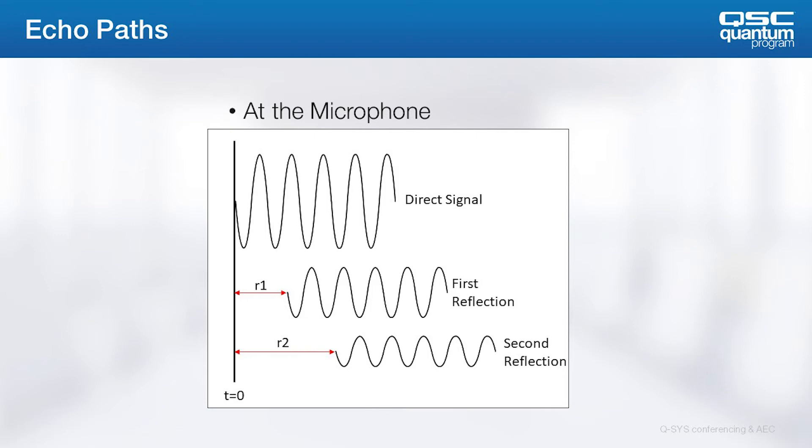We can conceptualize what's happening here by looking at each part of the echo path as a separate signal. Let's look at a very simple case with a direct signal and two reflections. Each reflection will naturally have a little more time-shift and decay in level. Real voice signals would be more complex than shown in this diagram, but we'll use these to keep it simple.